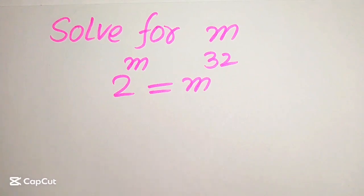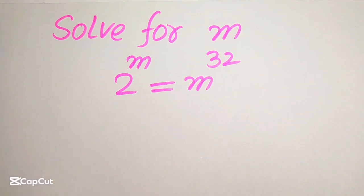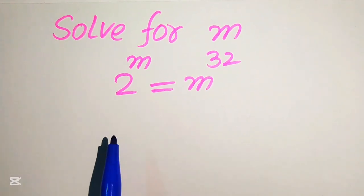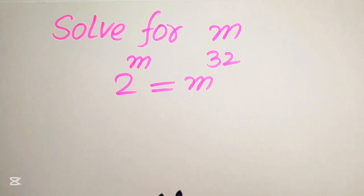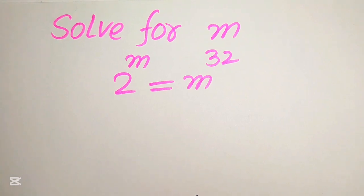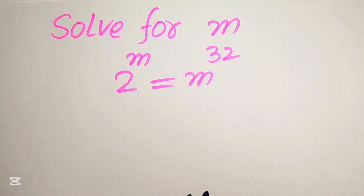Hello everyone, welcome to solve this nice math or algebra problem. Here we have 2 to the power of m equals to m to the power of 32, and we solve this problem for the values of m.